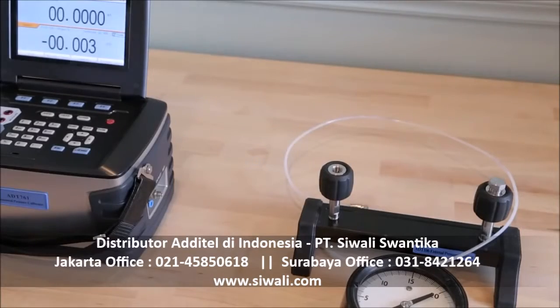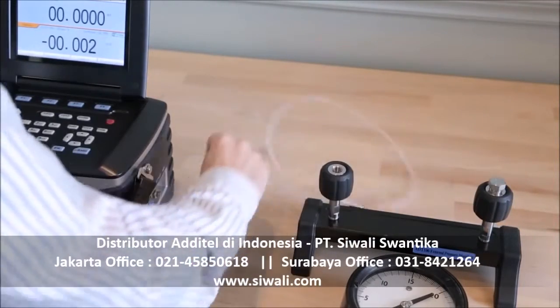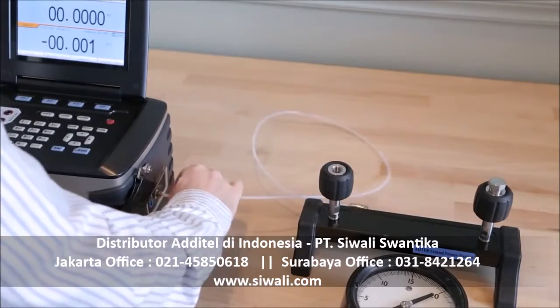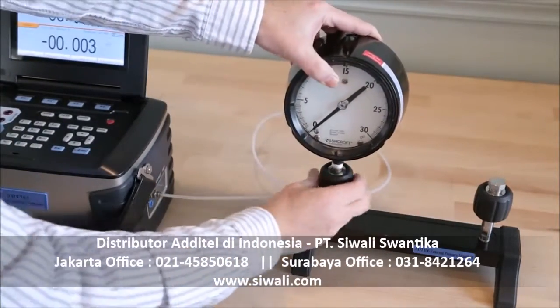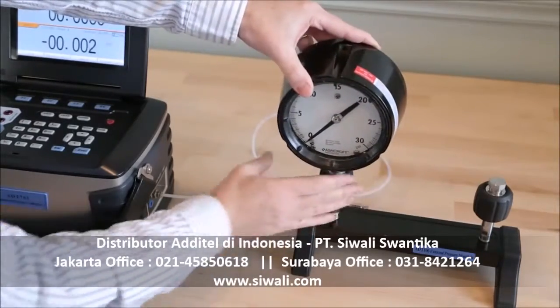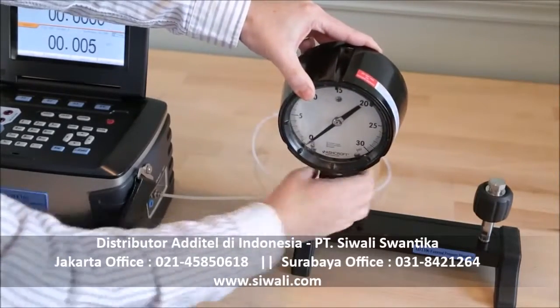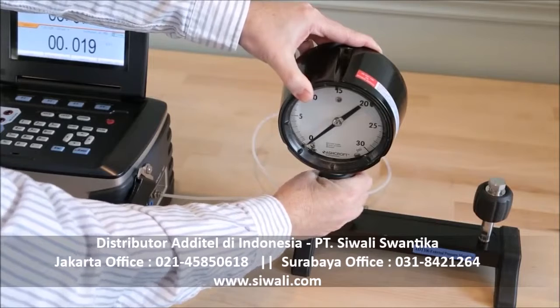Each 761 includes a pressure manifold with two quick connect adapters for connection to your device under test. The adapters do not require any tools or thread sealant. Simply connect the manifold to the 761 using the supplied tubing, screw in your test device, and you're ready to calibrate.